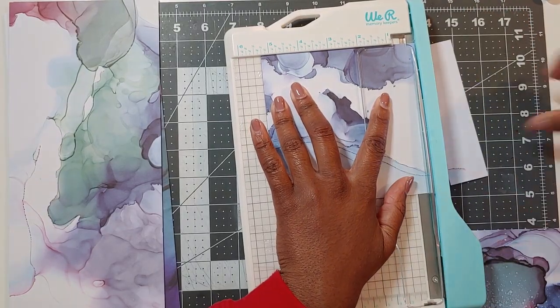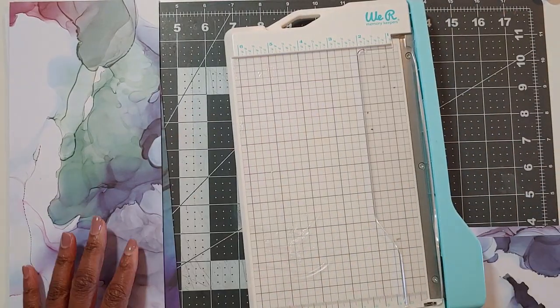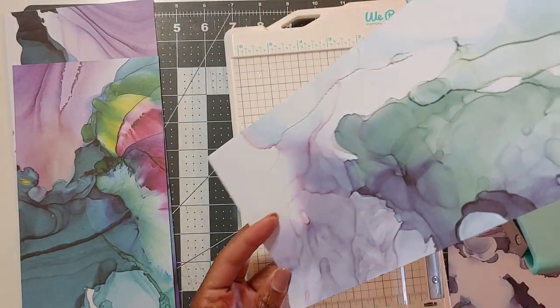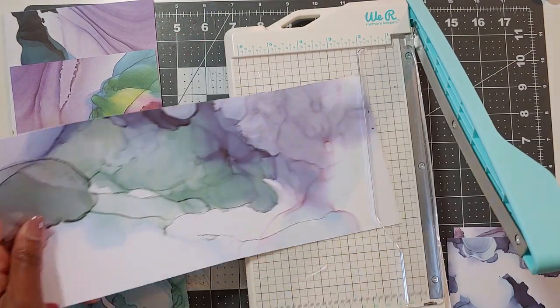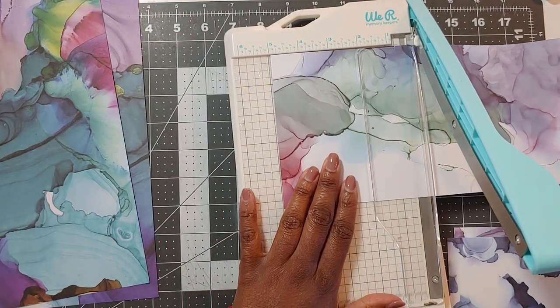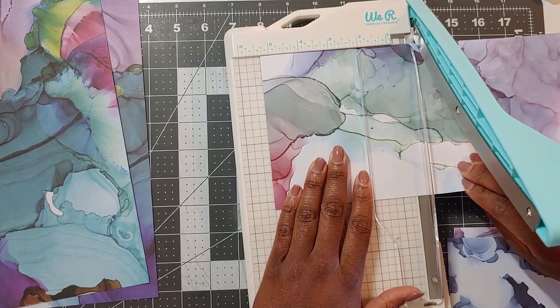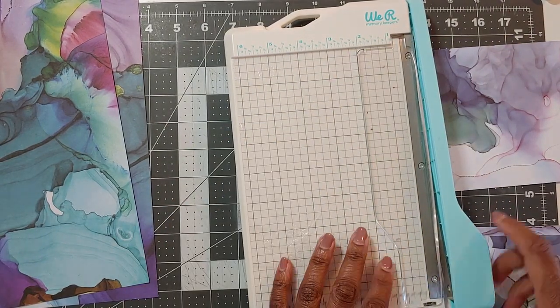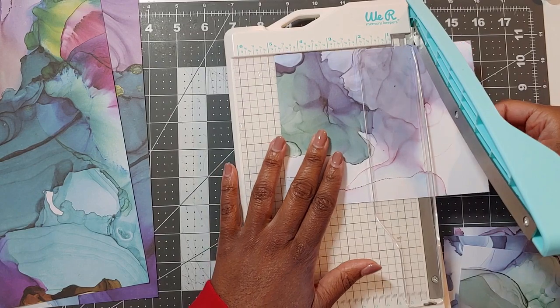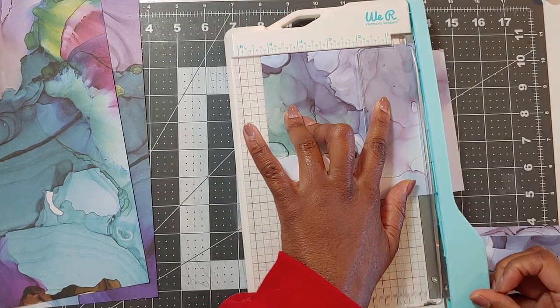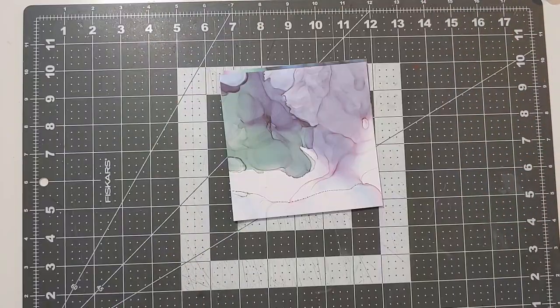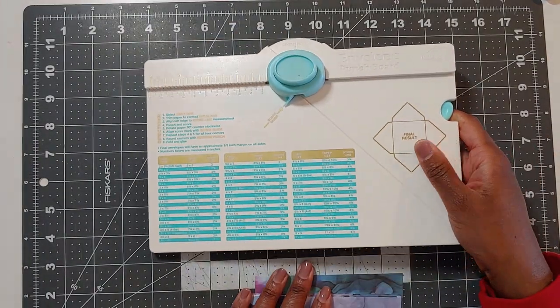Now you will get some scraps with this. Do not throw those away. We are going to use those to decorate our cards. So keep all of your scraps here. So I'm just going to go through and cut the rest of these sheets down to five and a quarter by five and a quarter and that will give me eight five and a quarter square pieces of paper that I will use to make my envelopes.